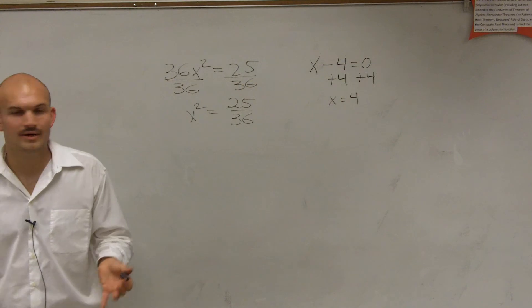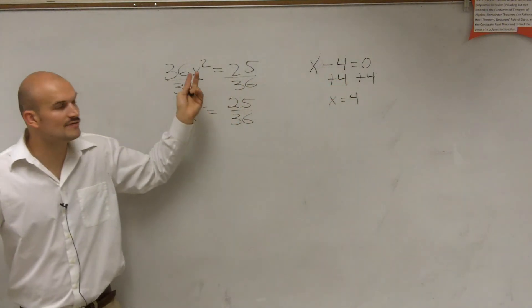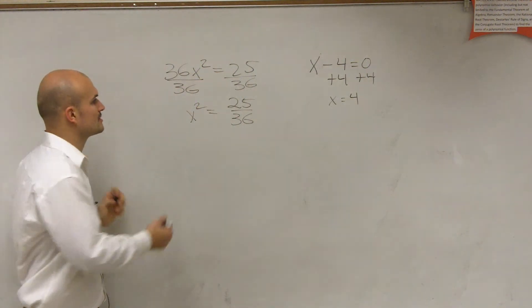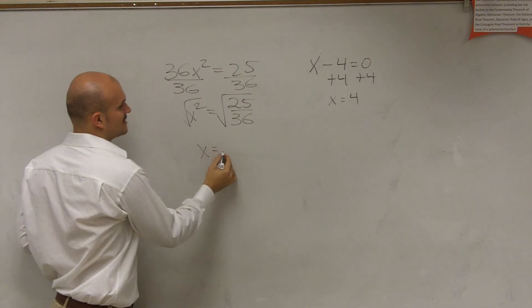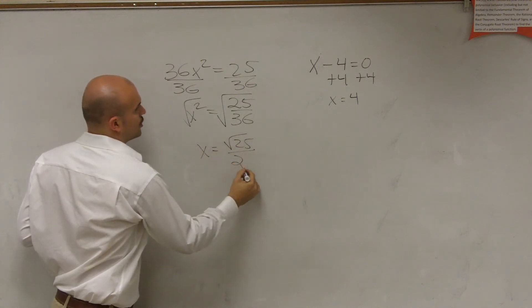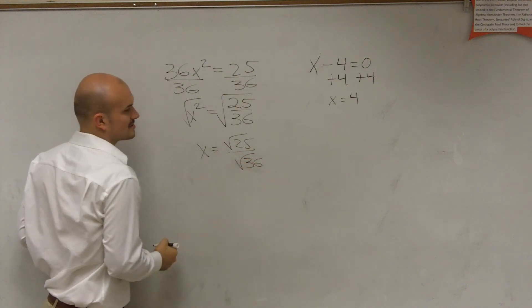I don't need to write it. Yep. So now, if the inverse of subtraction is adding, what's the inverse of squaring? Square root. So now you take the square root, and you're left with X equals the square root of 25 over the square root of 36.